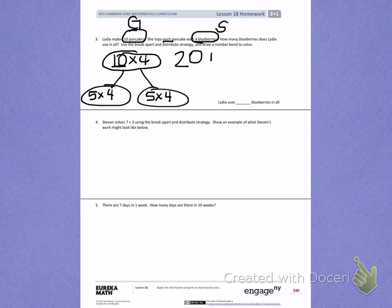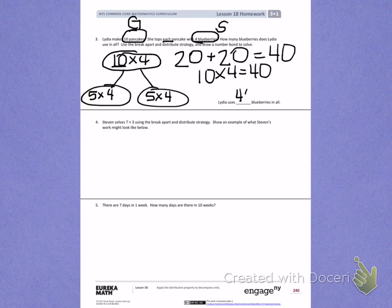That means my second 5 times 4 will also be 20. 20 plus 20 equals 40, which means 10 times 4 equals 40. Lydia uses 40 blueberries in all.